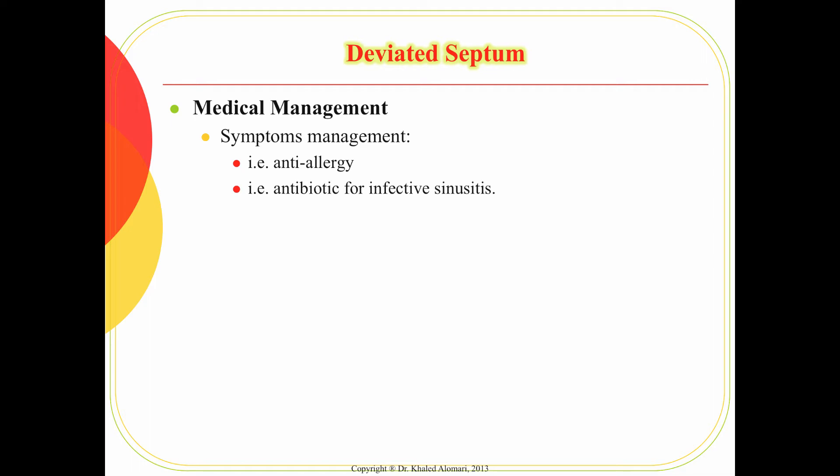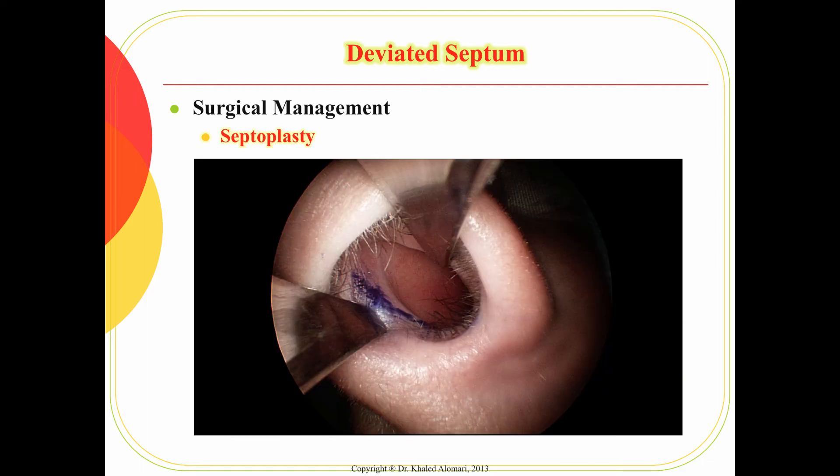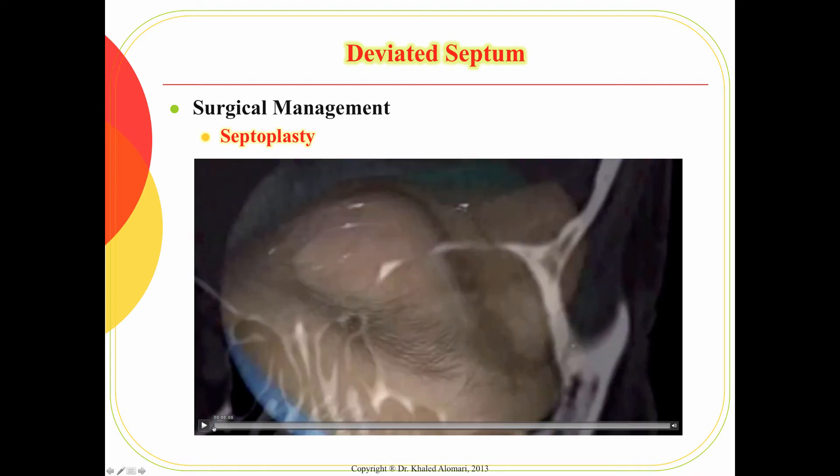If the deviation causes a respiratory problem, then we have to do some surgical management. The most common surgical management for deviated septum is septoplasty. 'Plasty' means to fix something and 'septo' comes from septum.